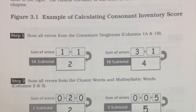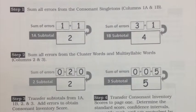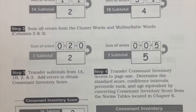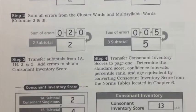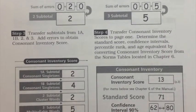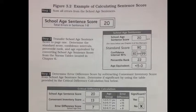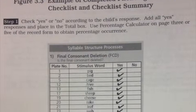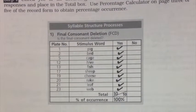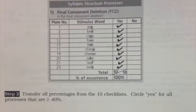This is an example of calculating the consonant inventory score. This is an example of calculating the sentence score. Here is an example of a completed phonological process checklist.